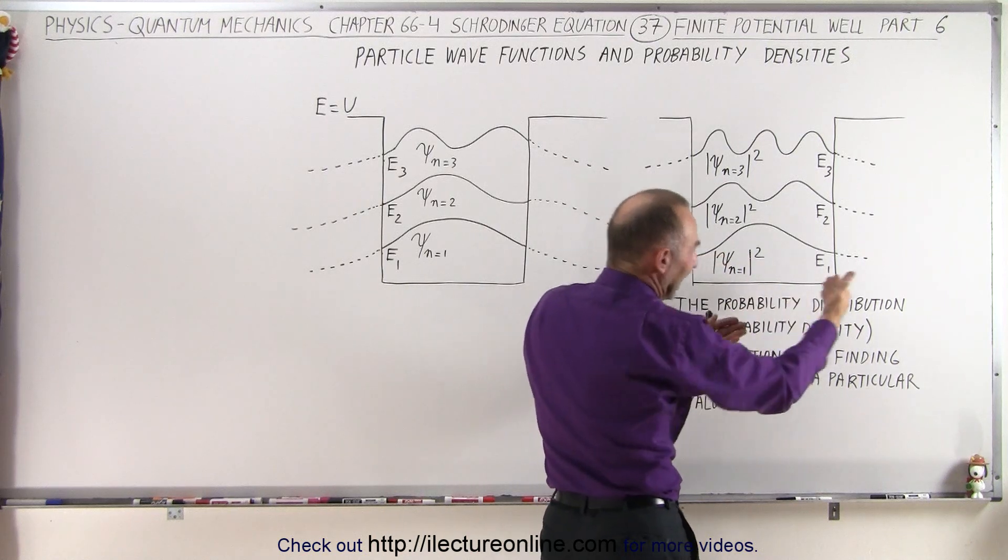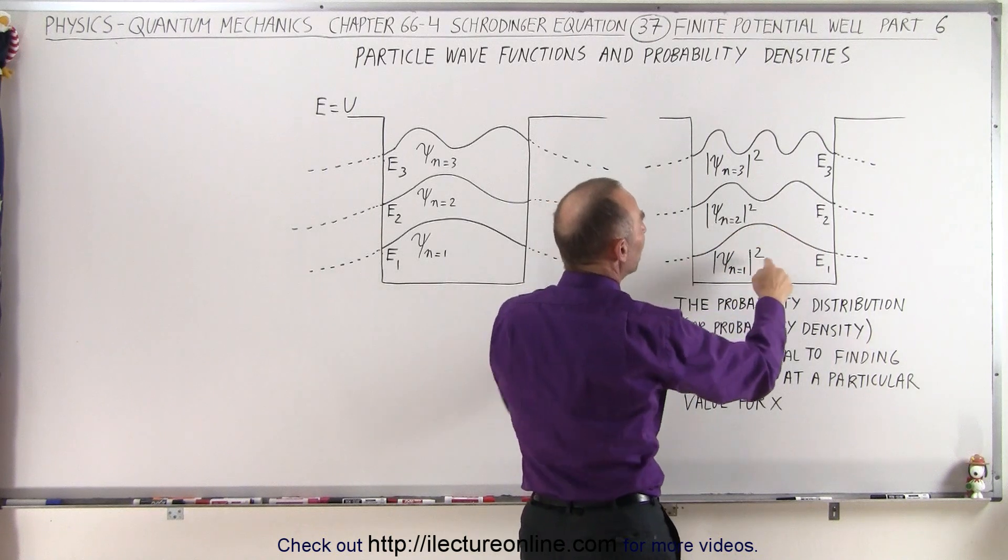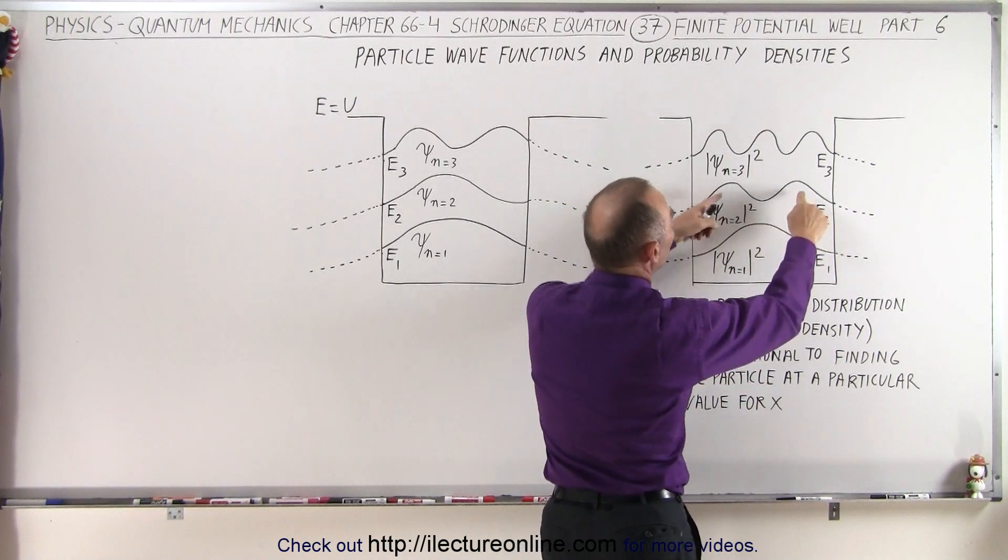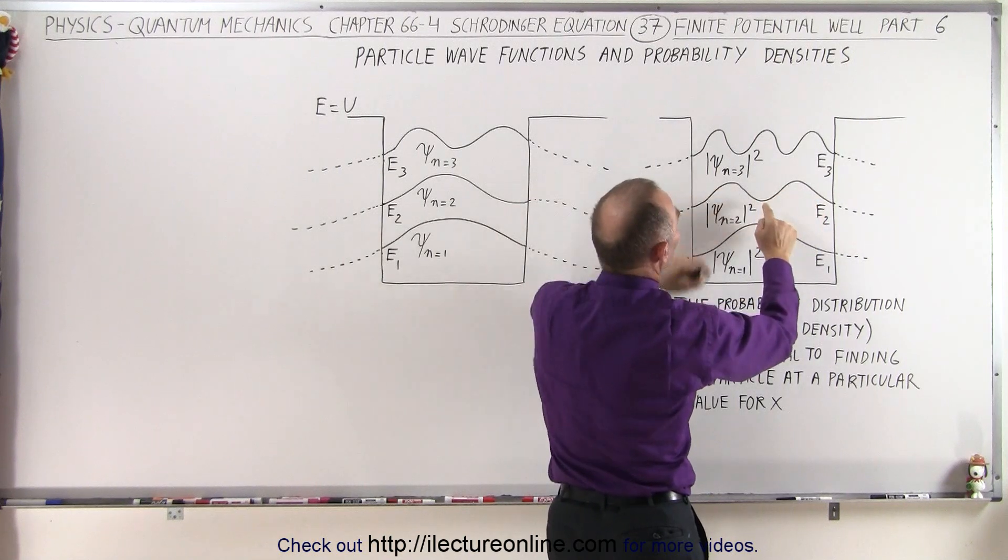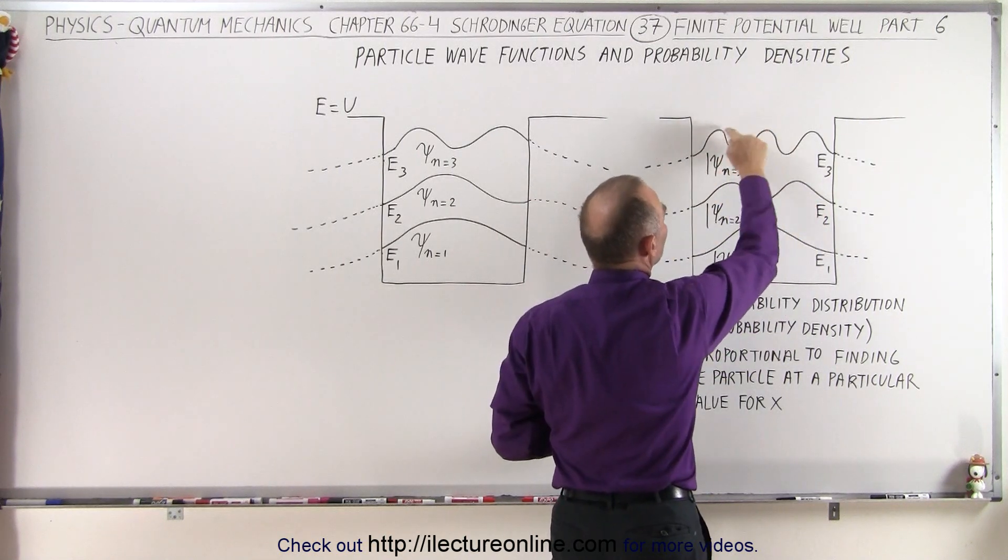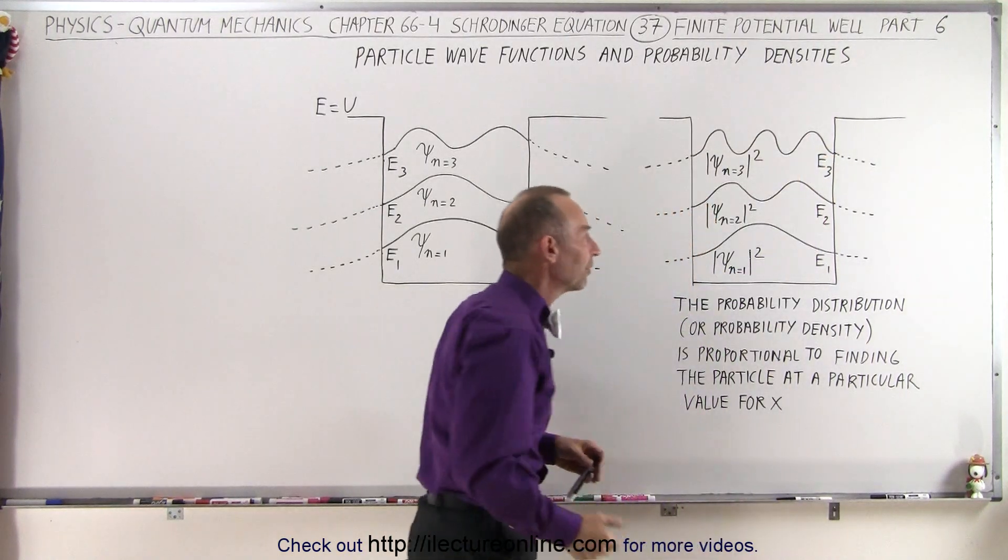We can see the highest probability will be right in the middle. For energy 2, we can see that the probability is highest at these two locations right here and less over here, and the probability will be higher over here when n equals 3 for the third energy level and so forth.